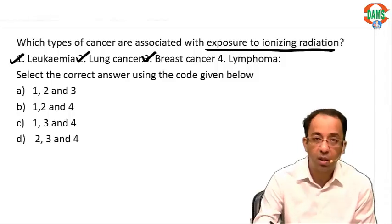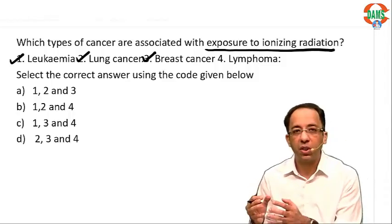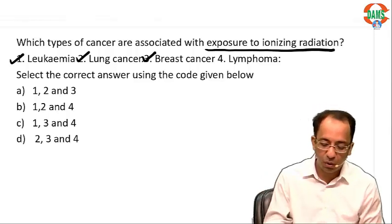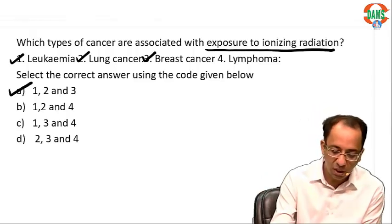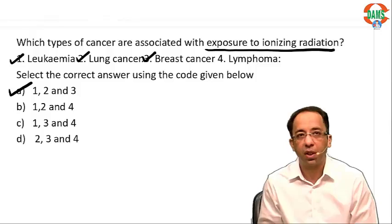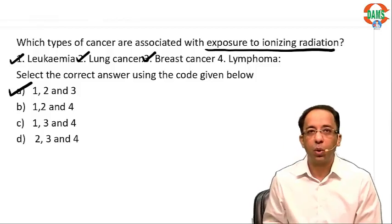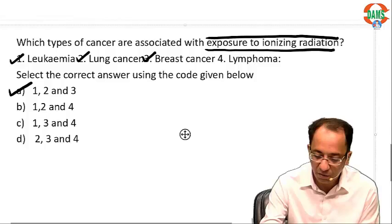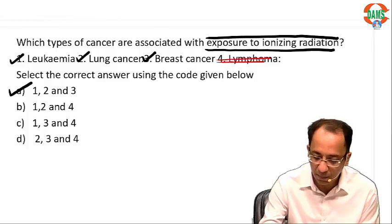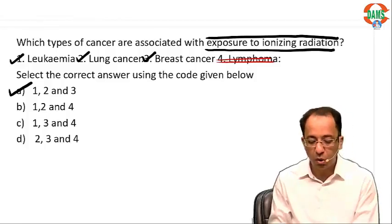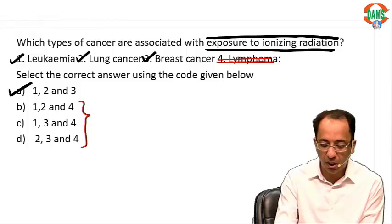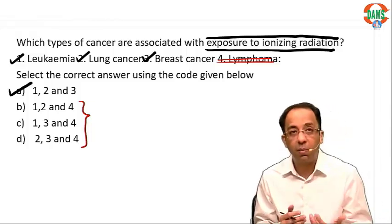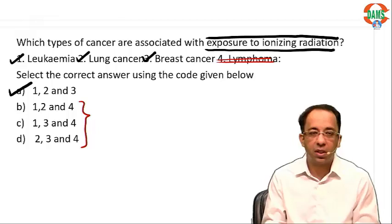Breast cancer risk is also increased by prior radiation to the chest. Looking at the combination, options 1, 2, and 3 — leukemia, lung cancer, and breast cancer — are all associated with ionizing radiation. Lymphoma is not the answer here. The only answer combination listing 1, 2, and 3 without lymphoma is the correct choice.